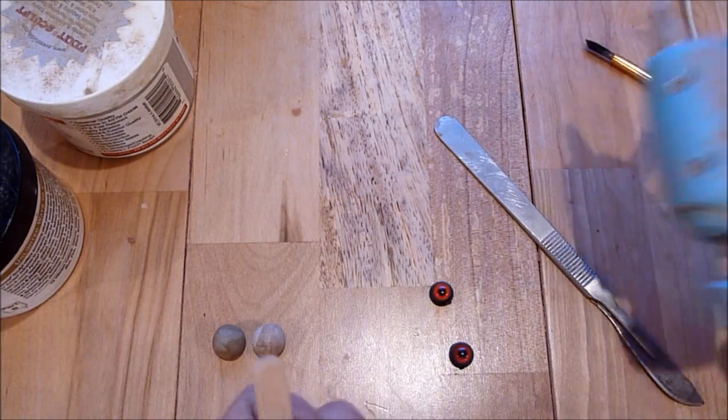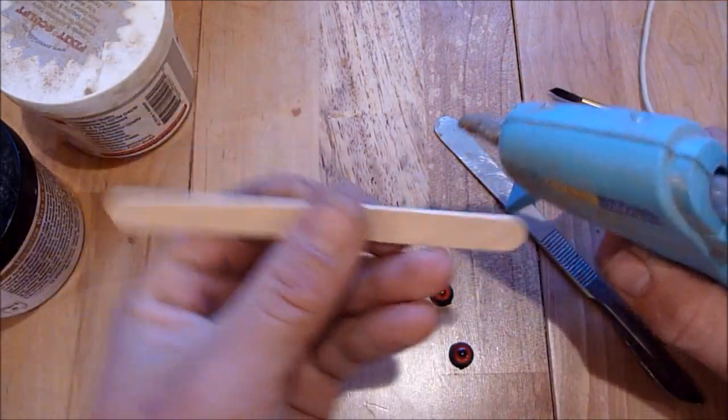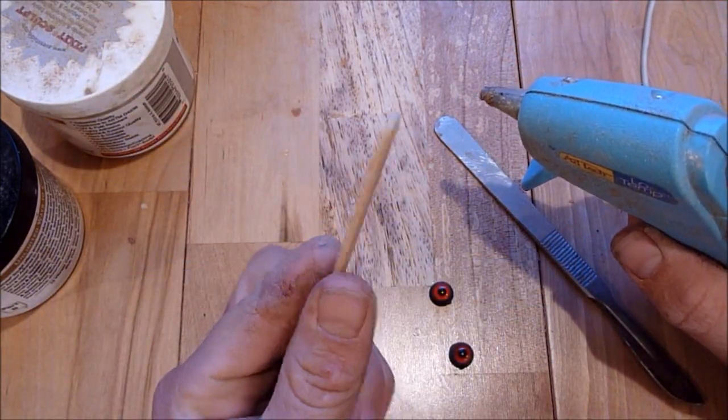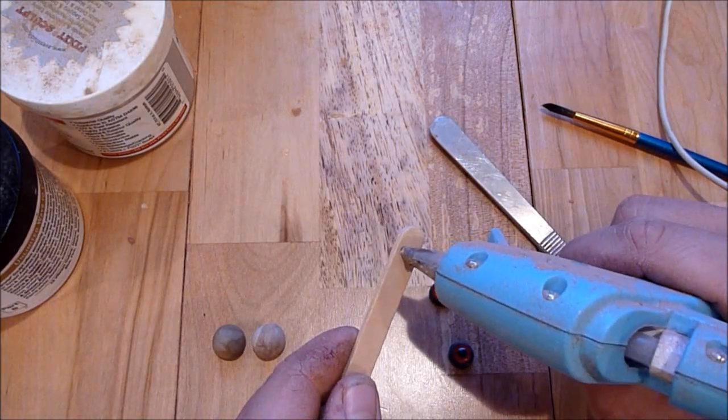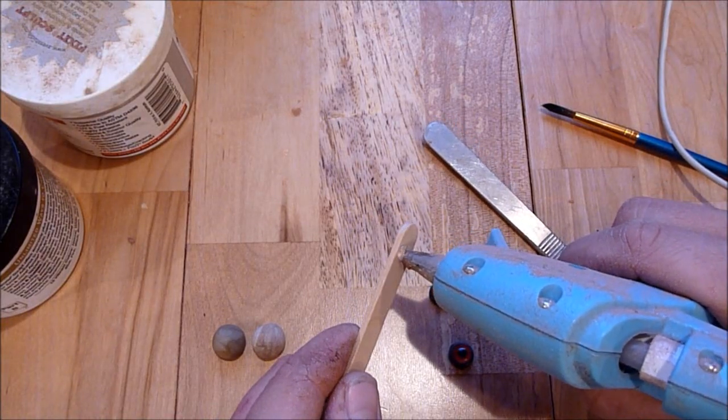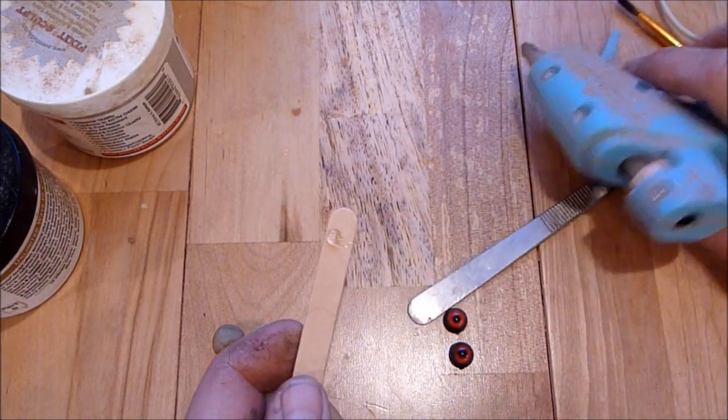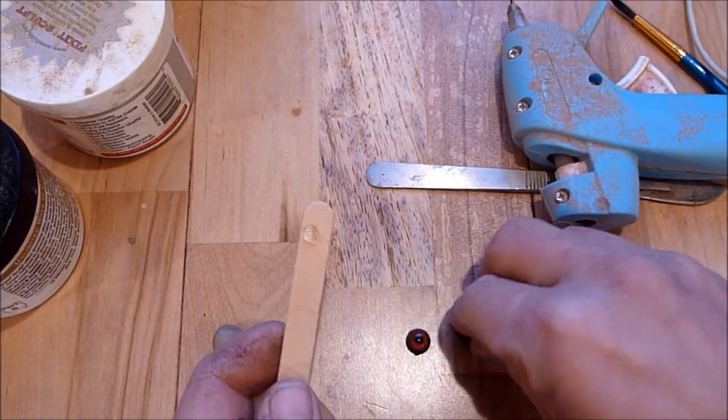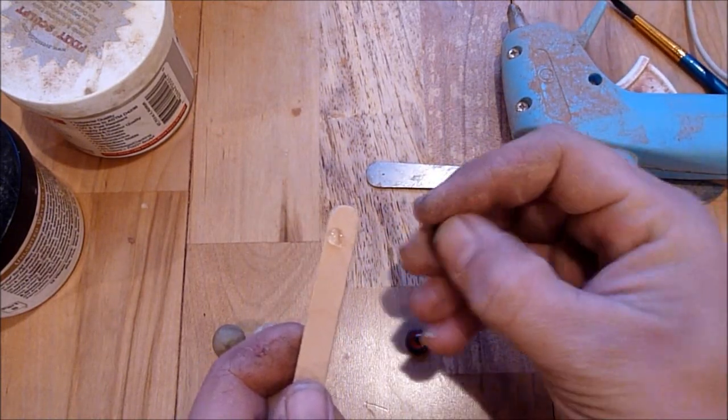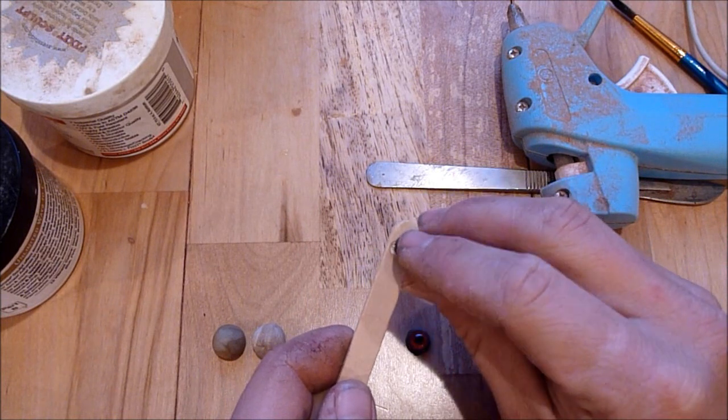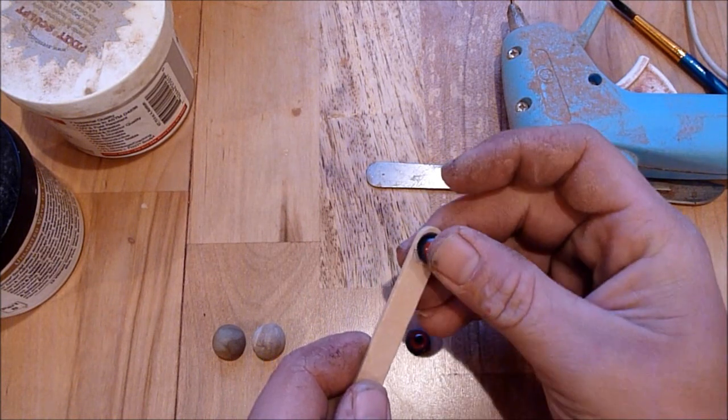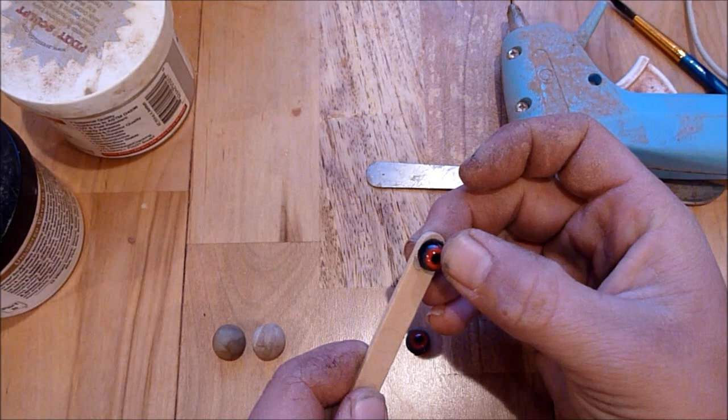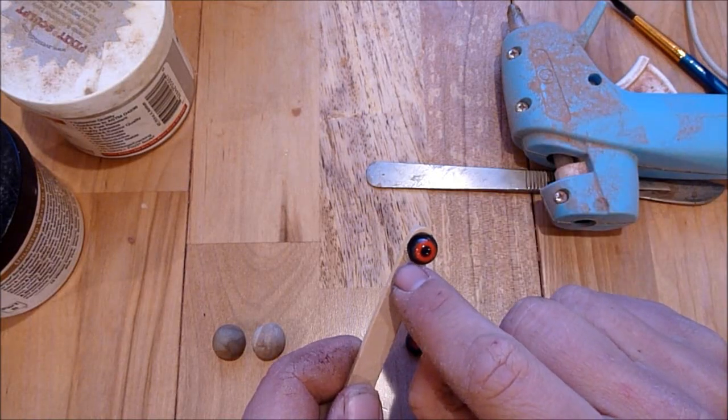But what I like to do first is take a regular popsicle stick and glue the eye. Just put a little dab of hot glue. These are acrylic eyes so I don't want to completely glue the whole thing down but I just glue it on one edge of it.